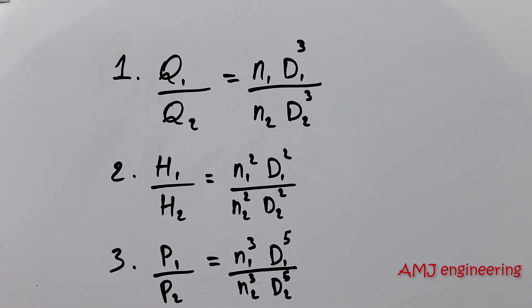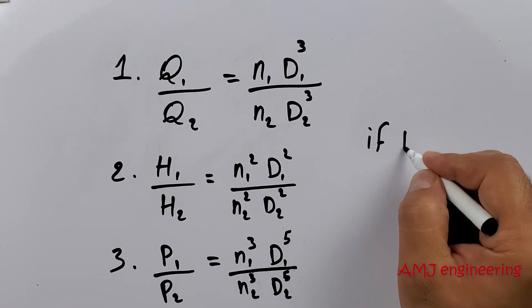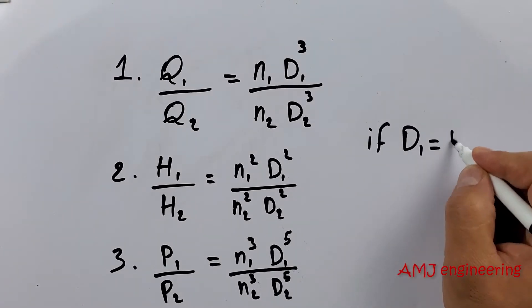P is the power, N the speed, D the impeller diameter, and H the head. If the impeller diameter is fixed, the affinity law becomes like this.